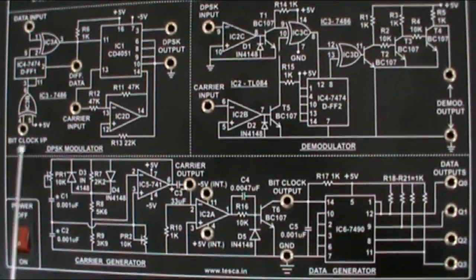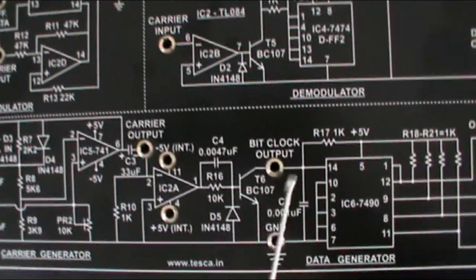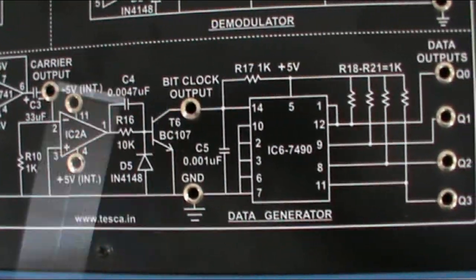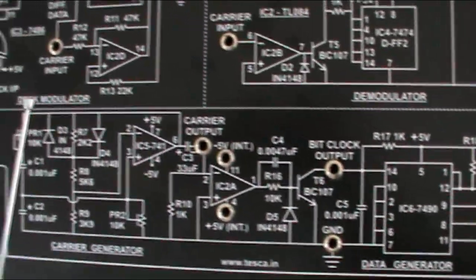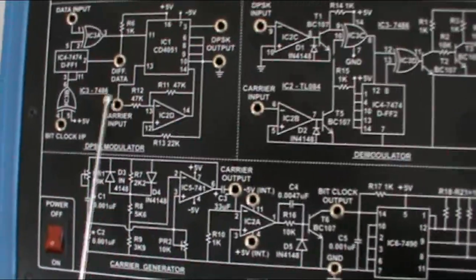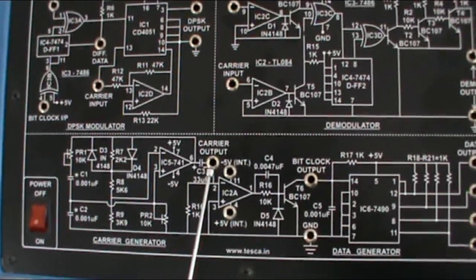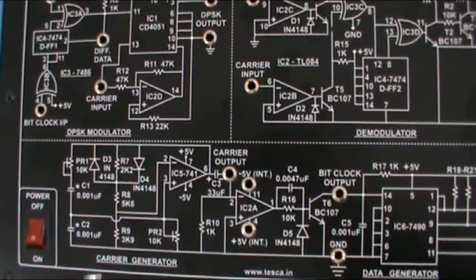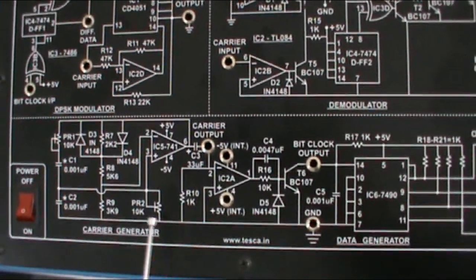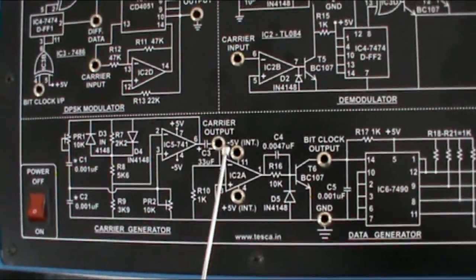This is the bit clock input. And this is the bit clock output terminal. Connect these two terminals at the time of experiments. This is the carrier input terminal, and this is the carrier output terminal. The carrier generator section generates the carrier signal which is available at this terminal.